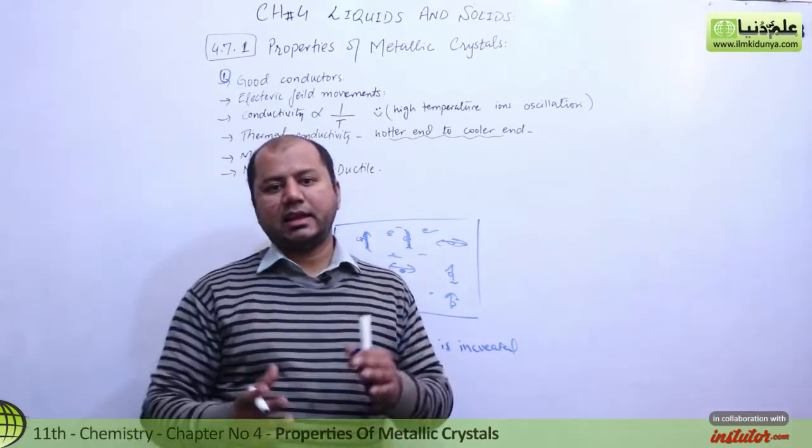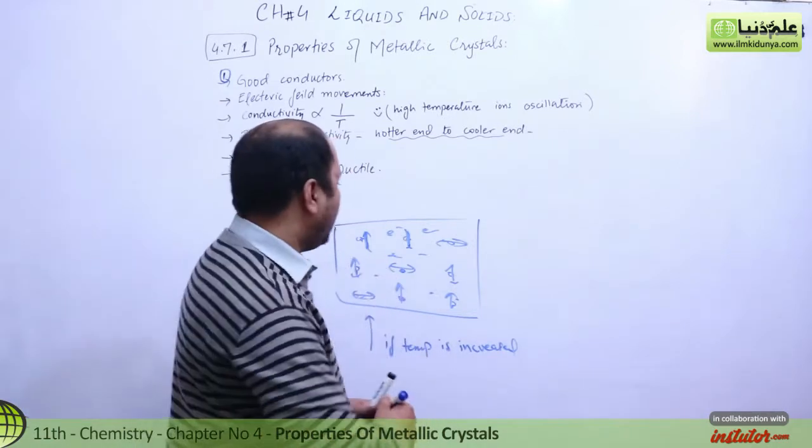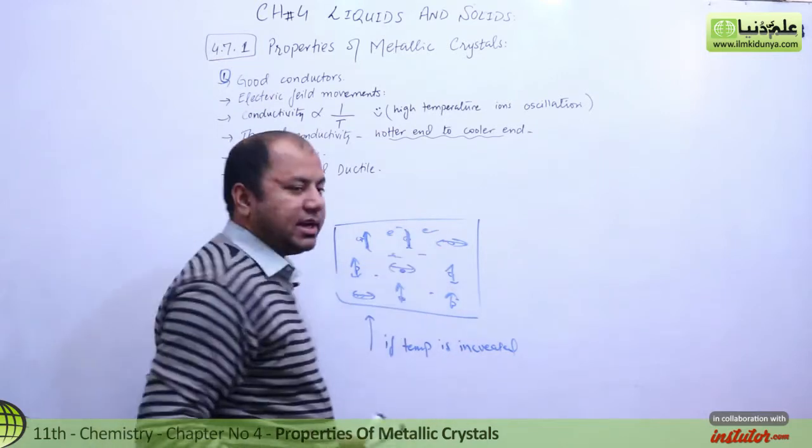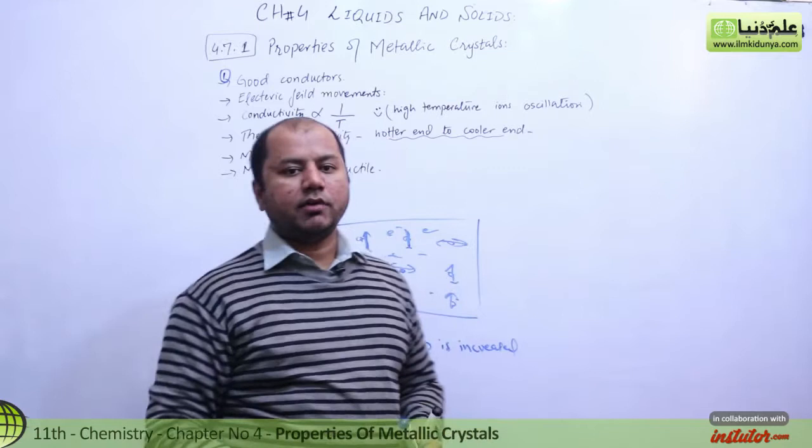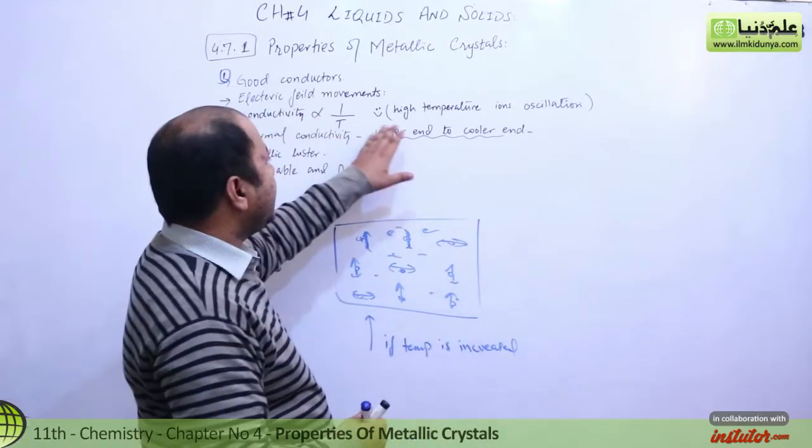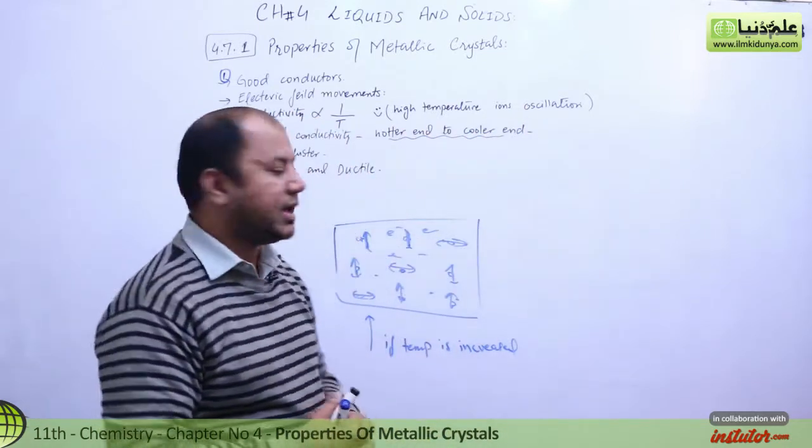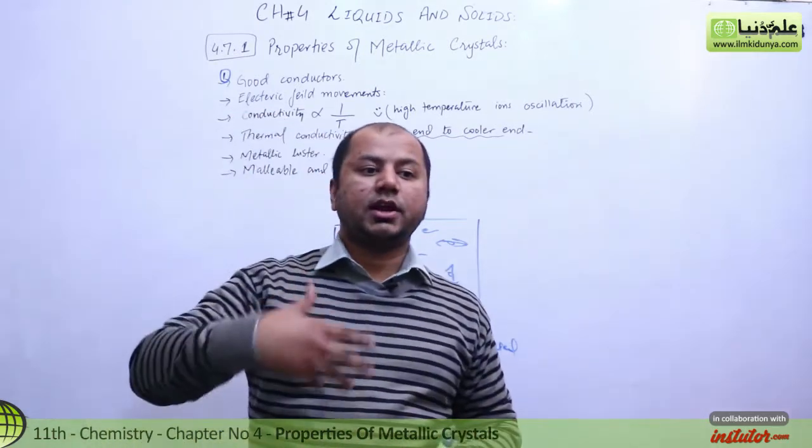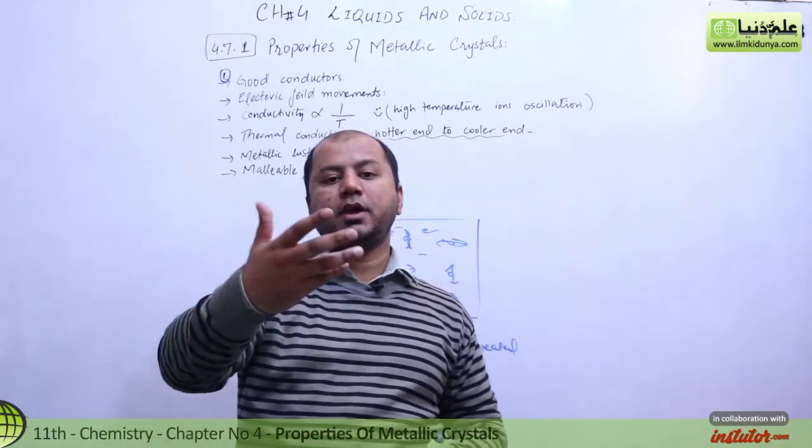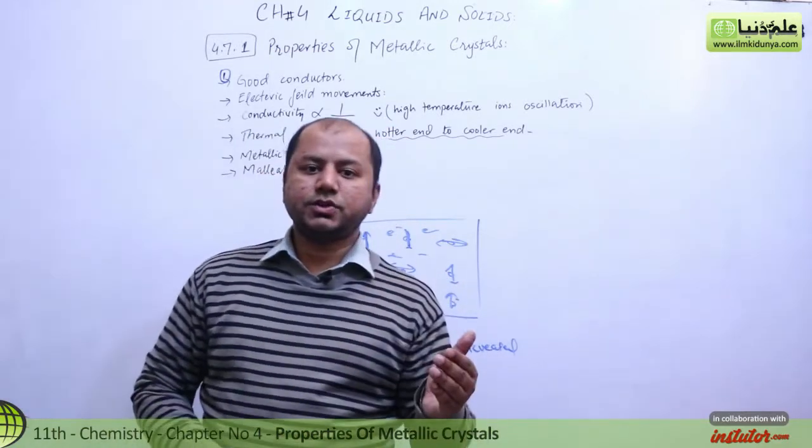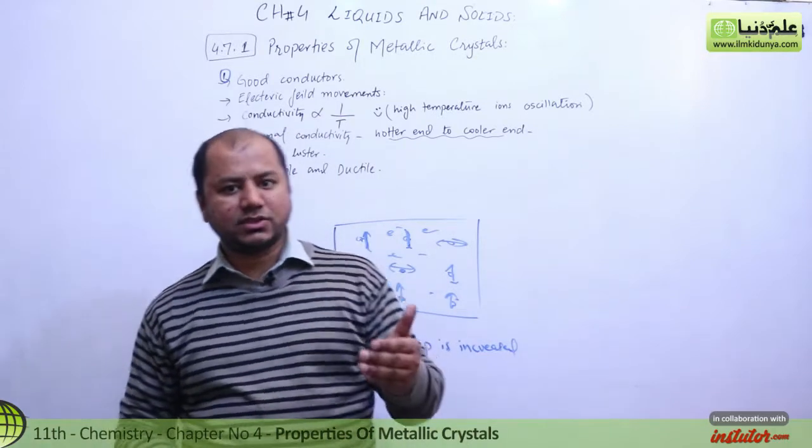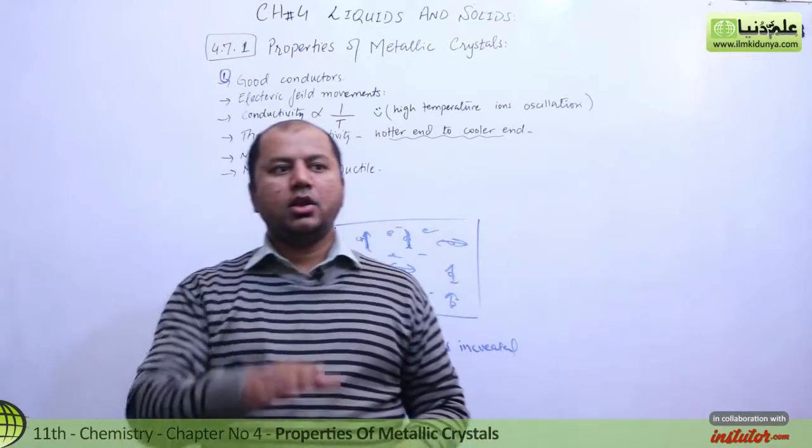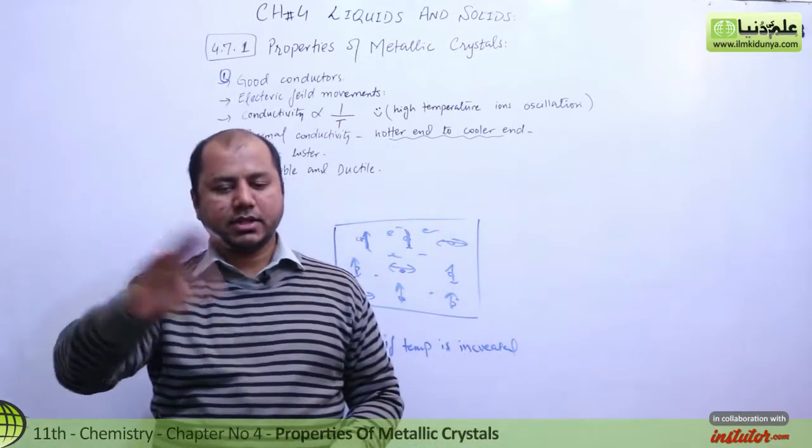Since the ions are also oscillating, there is less space for electrons to move. At high temperature, the ions oscillate more, which affects conductivity negatively. High temperature metallic sheets or lattices become bad conductors. At low temperature they are good conductors, but at high temperature they are not.